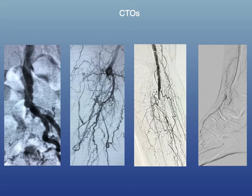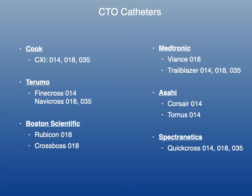If you've never seen CTOs, here is what they look like — an iliac CTO, then SFA, then a popliteal, and then a tibial. You're going to see CTOs on a daily basis when dealing with patients with critical limb ischemia.